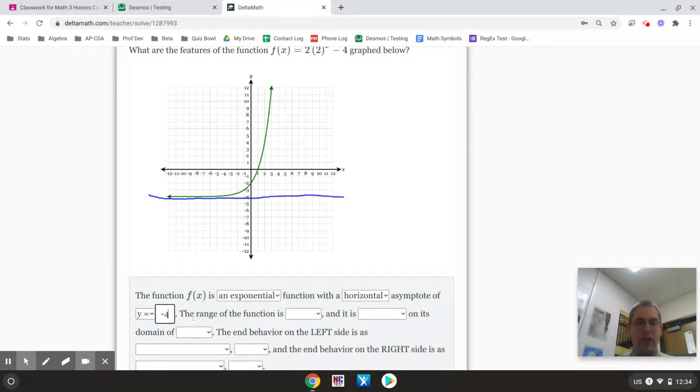Now, my range, in this case, is restricted because there is a horizontal asymptote. So, the range starts at negative 4 and goes to infinity. So, that is going to be my range.